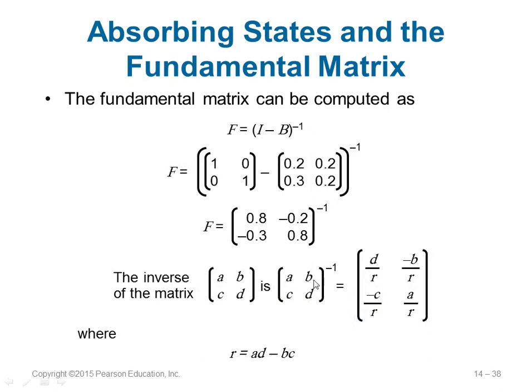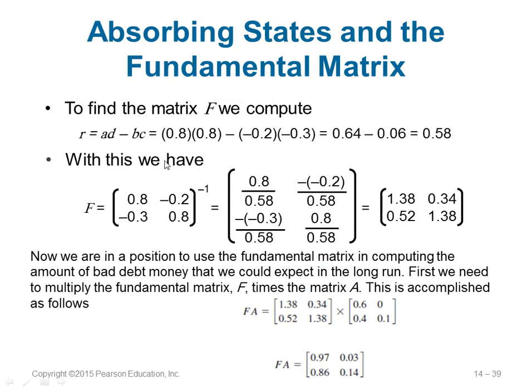Multiply the values, calculate AD minus BC, and you get the fundamental matrix F. Now you want to know the probability of ending up in the bad debt state or the paid state. This is done by multiplying F (the fundamental matrix) by A to get FA.